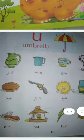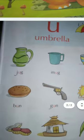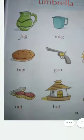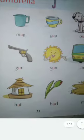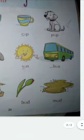Okay children, U for umbrella. Jug, mug, bun, gun, nut, hot, sun, cup, mug, mud, bus.